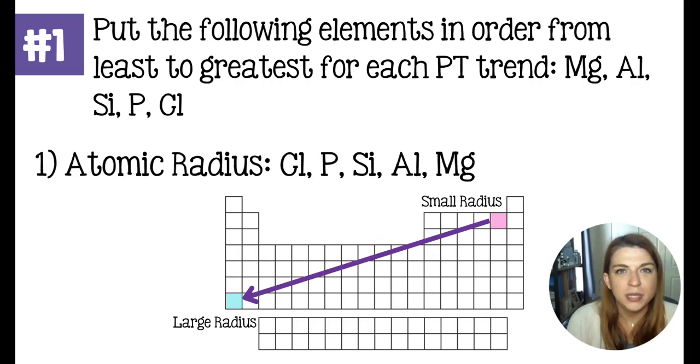So at this point, your teacher should be able to give you a small string of elements. Typically, they're going to be in the same group, or the same period, or maybe a combination of both, and will be able to ask you to put them in order of atomic radius or metallic character, ionization energy, or electronegativity. And just using the trends, you should be able to make some comparisons. So this question asks to put the following elements in order from least to greatest for each periodic table trend. And here's the answers.